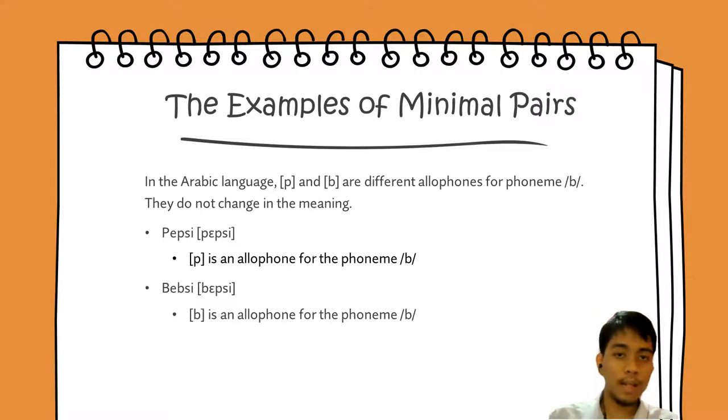But in the Arabic language, P and B are different allophones from phoneme B. They do not change the meaning. So basically, if we say Pepsi or Bepsi, it does not change the meaning. It is still the same thing. Because B is an allophone for the phoneme B, and P is an allophone for the phoneme B.